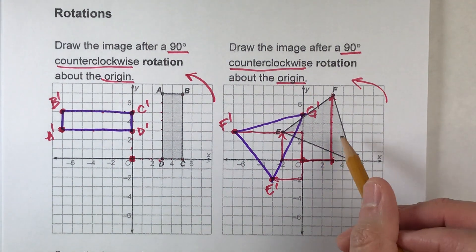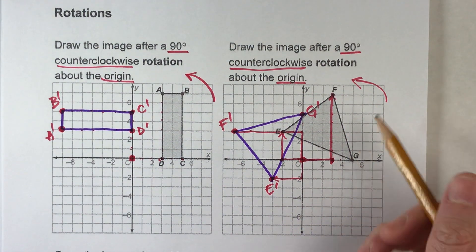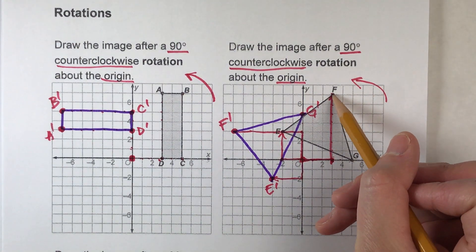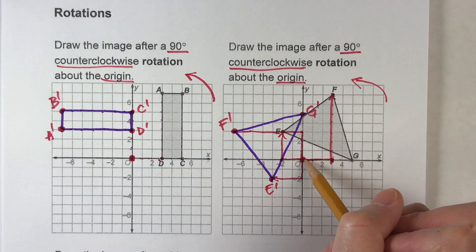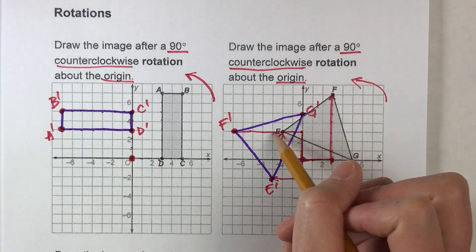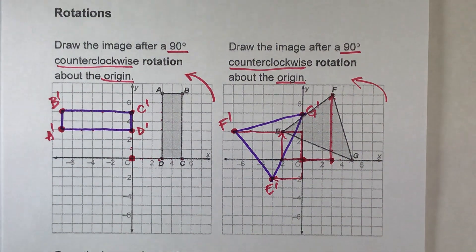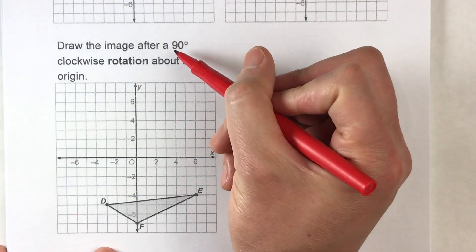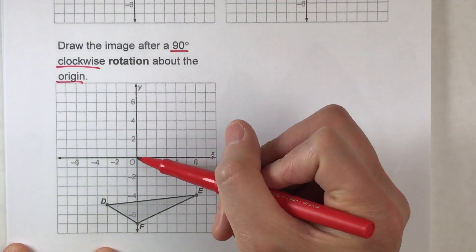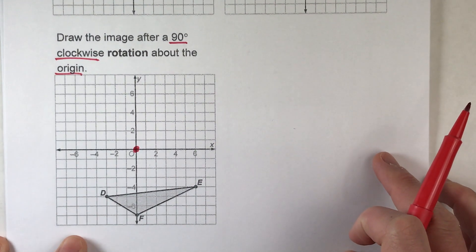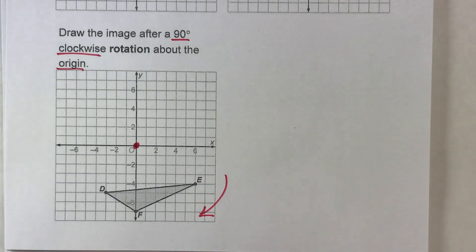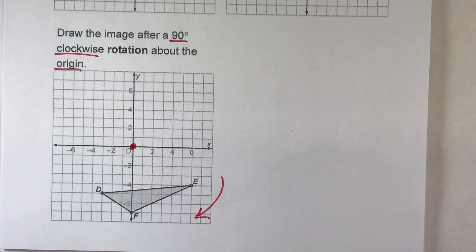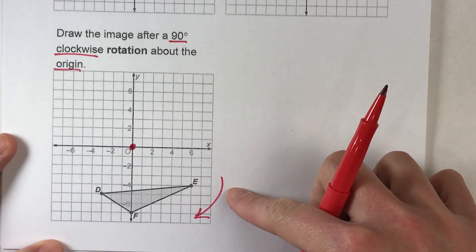Some of the key takeaways: if the points are on the axes, do those first — those are the easiest. For the ones that aren't, follow the axes and then go into the quadrant that you know it is. When you rotate it, follow the other axis, and then cut into the quadrant you know it's gonna be in. We'll do one more, but this time I'm gonna switch it up — it says draw the image after a 90-degree clockwise rotation about the origin. We're still spinning around the origin, but this time we're going clockwise, the other direction. Our strategy doesn't change — it's just important to draw that arrow to remind you which way to go.